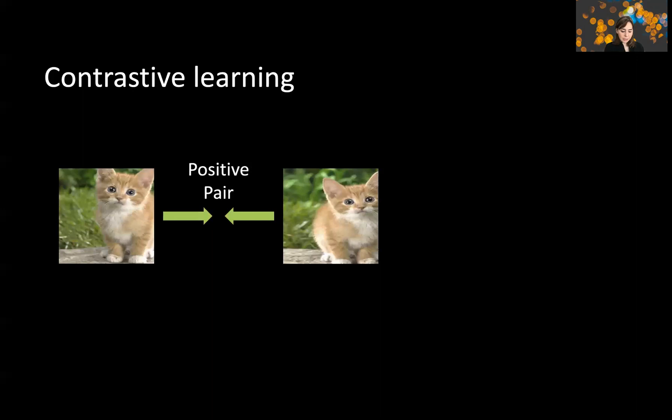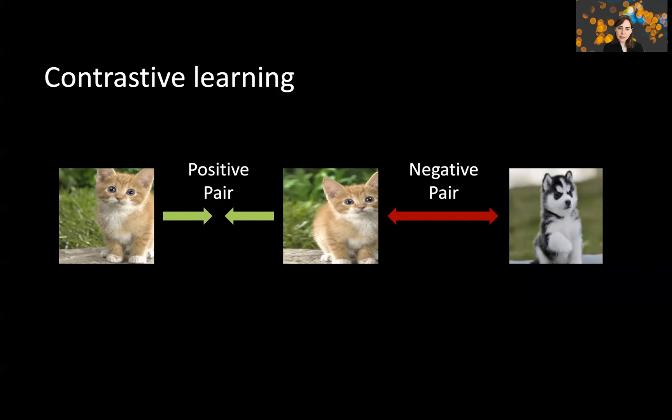In contrastive learning, we take each image and create positive pairs, which are modifications of this image that maintain the semantic information — for example, the fact that the image is a cat — while altering the image in a way that does not change the semantic information. The rest of the images in the dataset act as negative pairs. Contrastive learning learns a representation that ensures positive pairs are close to each other in the feature space, and negative pairs are away from each other.